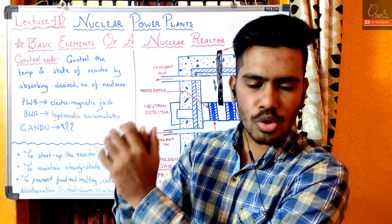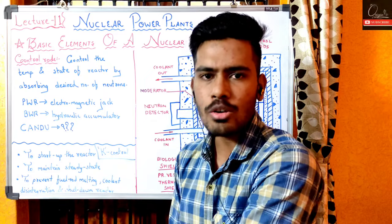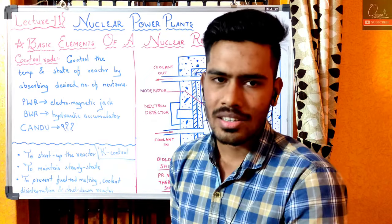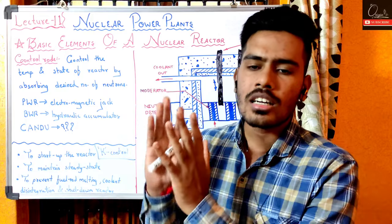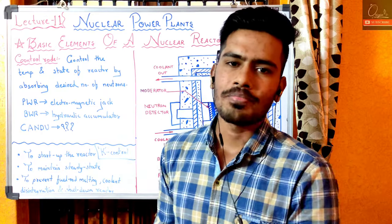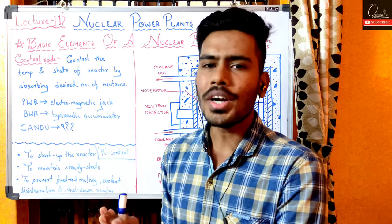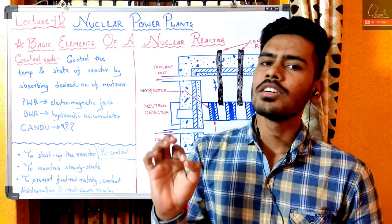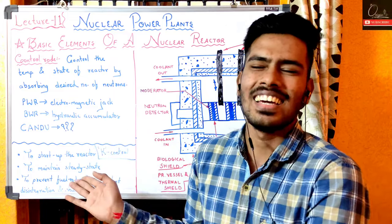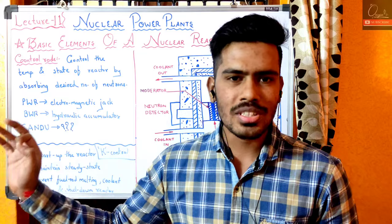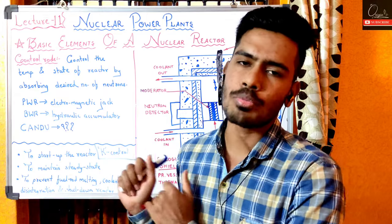Control rod वो element था जो neutrons को absorb कर रहा था। Coolant, reflector, moderator इन तीनों की qualities में एक quality common थी - that they should not absorb any neutrons। तो the only element which absorbs the neutrons in any reactor is the control rod। इसका material ऐसा होता है कि यह excess neutrons को easily absorb कर सके।